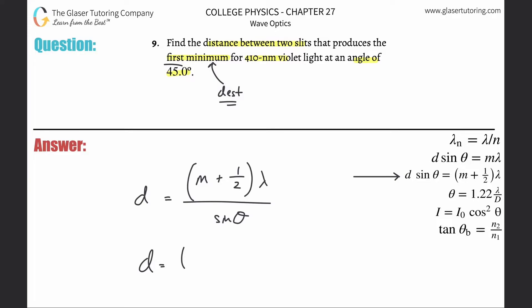The first minimum has an M value of zero this time. So you can say first max has then an M value equal to one, but your first minimum when you're dealing with destructive interference, now this was constructive interference, is going to result when M is equal to zero now.